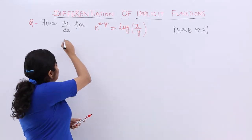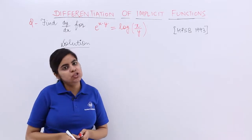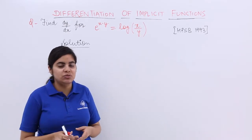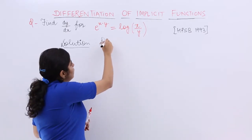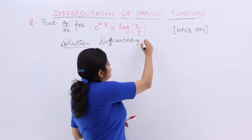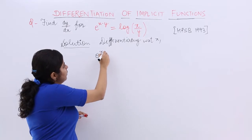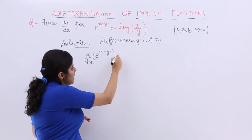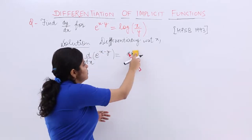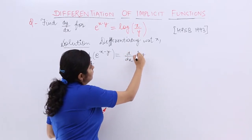Let's write the solution. My problem has an exponential function. Now, what is the differentiation of an exponential function? It is the same function itself — differentiation of e raised to the power x is e raised to the power x only. So here, differentiating both sides with respect to x, the left side gives the same exponential function differentiated with respect to x, and the right side is d by dx of log x upon y.